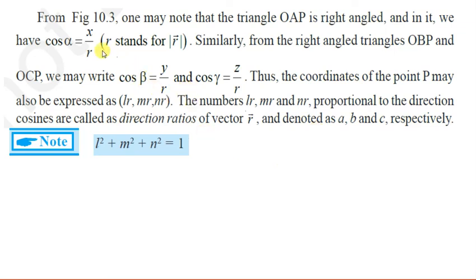Now if we calculate l square plus m square plus n square, it becomes x square upon r square plus y square upon r square plus z square upon r square, which equals x square plus y square plus z square upon r square. But x square plus y square plus z square is the magnitude squared of vector OP, which is r square. So we get l square plus m square plus n square equal to 1.